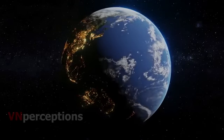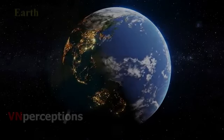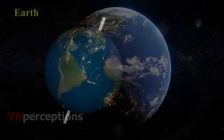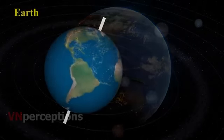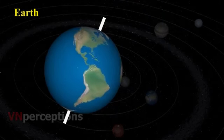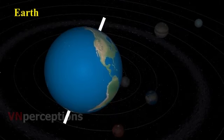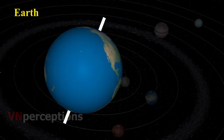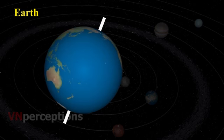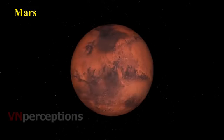The axis of rotation of the Earth is not perpendicular to the plane of its orbit. The tilt is responsible for the change of seasons on the Earth. The Earth has only one moon.